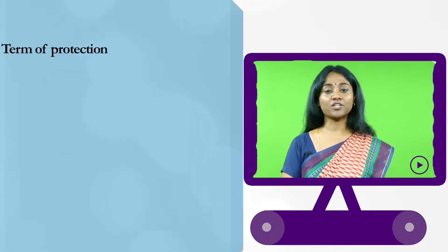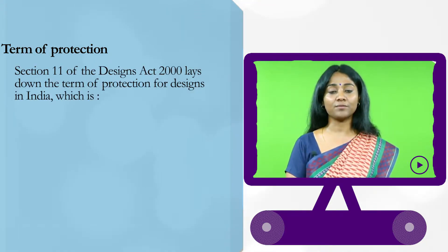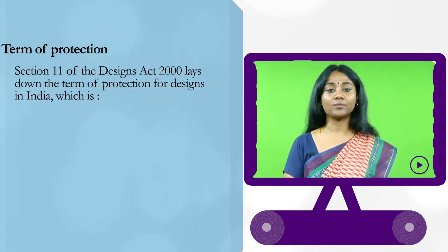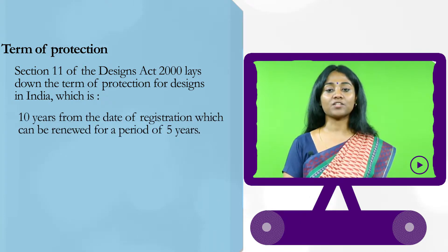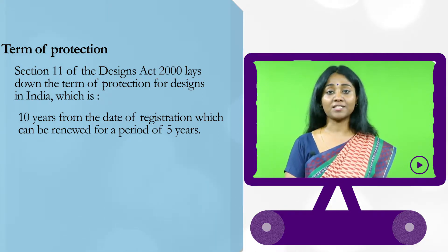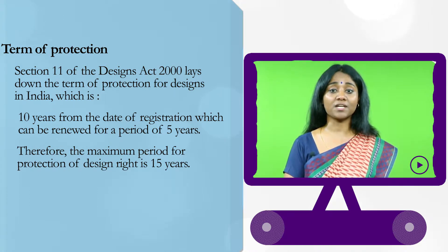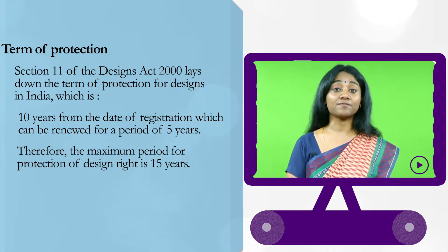The term of protection of an industrial design is defined under Section 11 of the Designs Act of 2000, which lays down that 10 years from the date of registration, which can be renewed for a period of 5 years, leads to a term of protection of any design in India. Therefore, the maximum period for protection of a design right is 15 years.